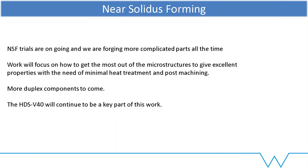The next stages: Mondragon and ourselves are making more and more complicated parts all the time. The work will really focus on how to get the most out of the microstructures for these parts — how to optimise the amount of dynamic recrystallisation, get the best material properties, as well as the right shape for these really complicated forging processes. I'd love to be producing more of these duplex parts — they're fun, they're exciting. It's really something that other processes can't do. For the facility going forward, the HDS is definitely the port of call for that.